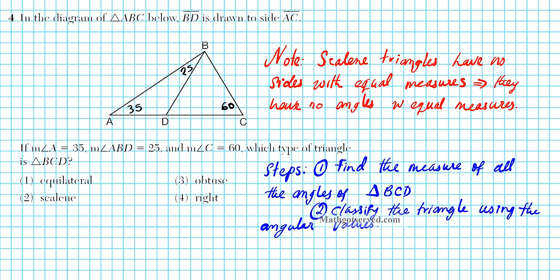Here's a shortcut: if you have two triangles in this orientation, the interior angle here is the sum of the two non-adjacent interior angles of the larger triangle. So you just add 25 plus 35, which gives you 60 for angle BDC. You then have 60, 60, and 60 — that's an equilateral triangle. Option number 1. Now let me show you the step-by-step process.